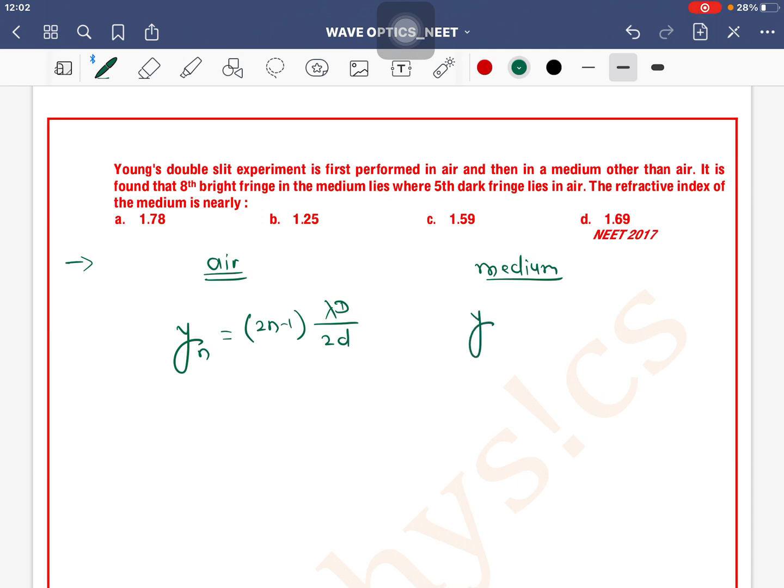8th bright fringe. The formula yn is equal to n lambda d divided by d. As the light is in a medium, the wavelength will be lambda dash, and we know that lambda dash can be given as lambda by mu, where lambda is the wavelength of light in air and mu is the refractive index of the medium.